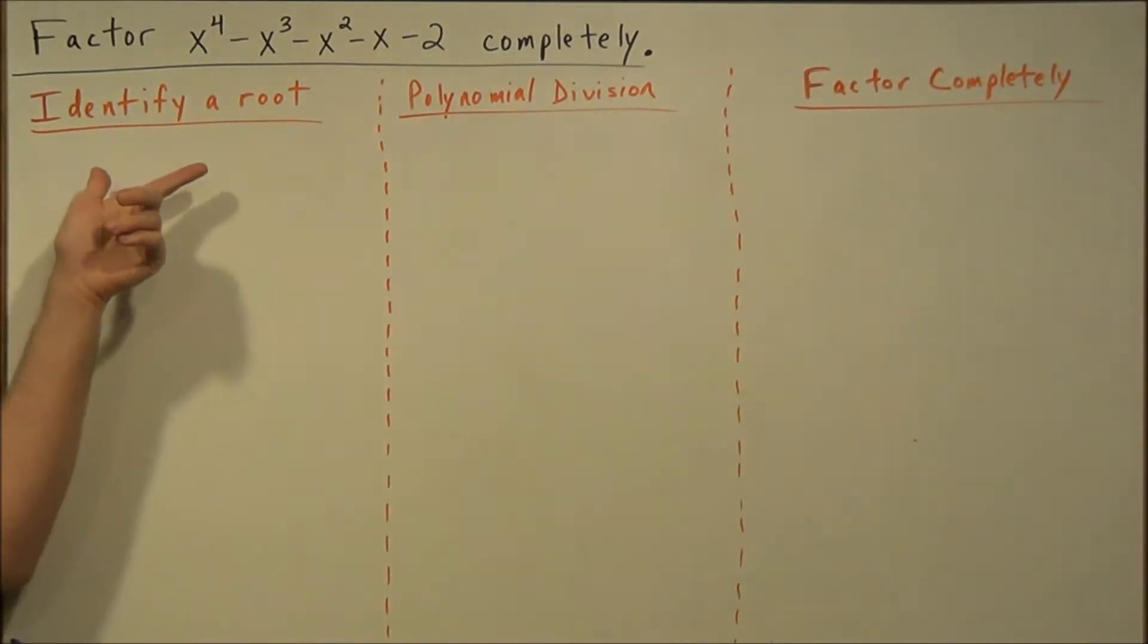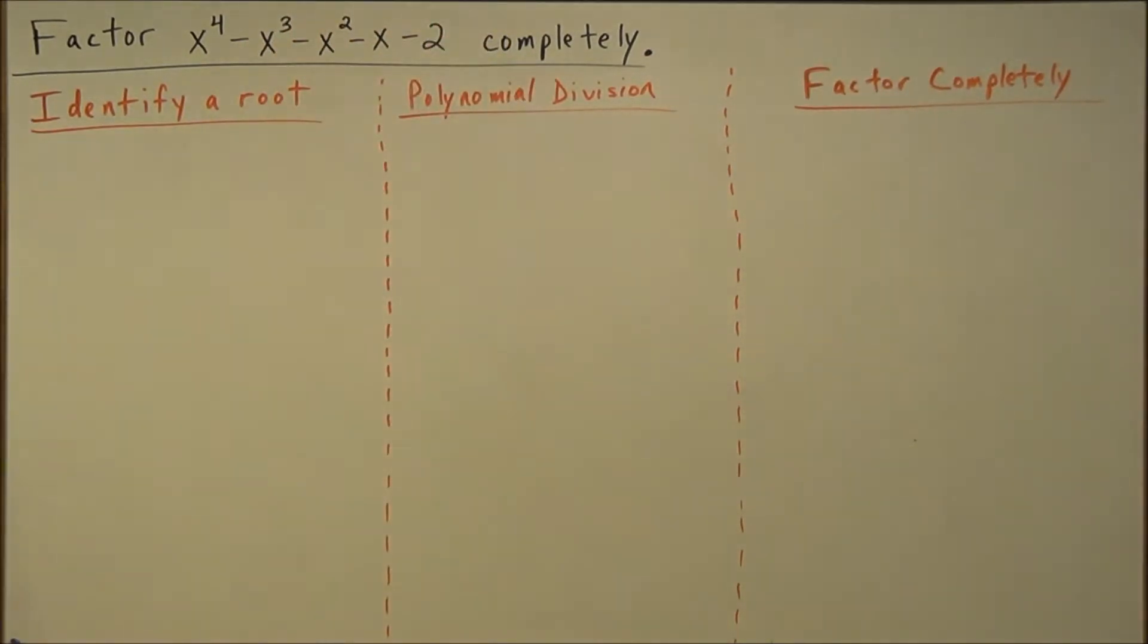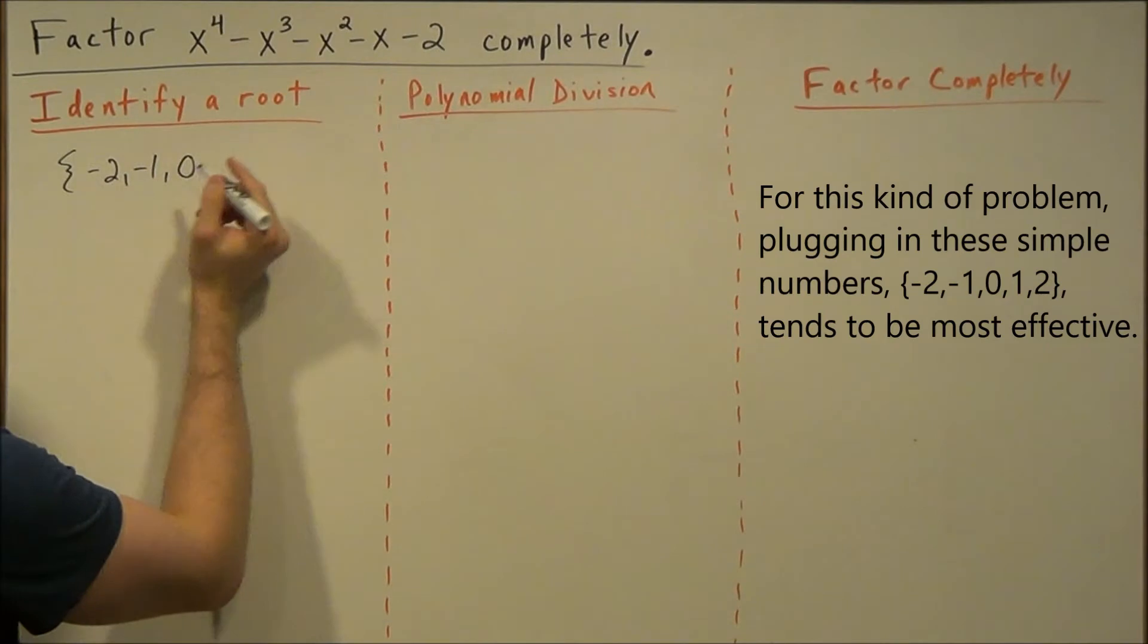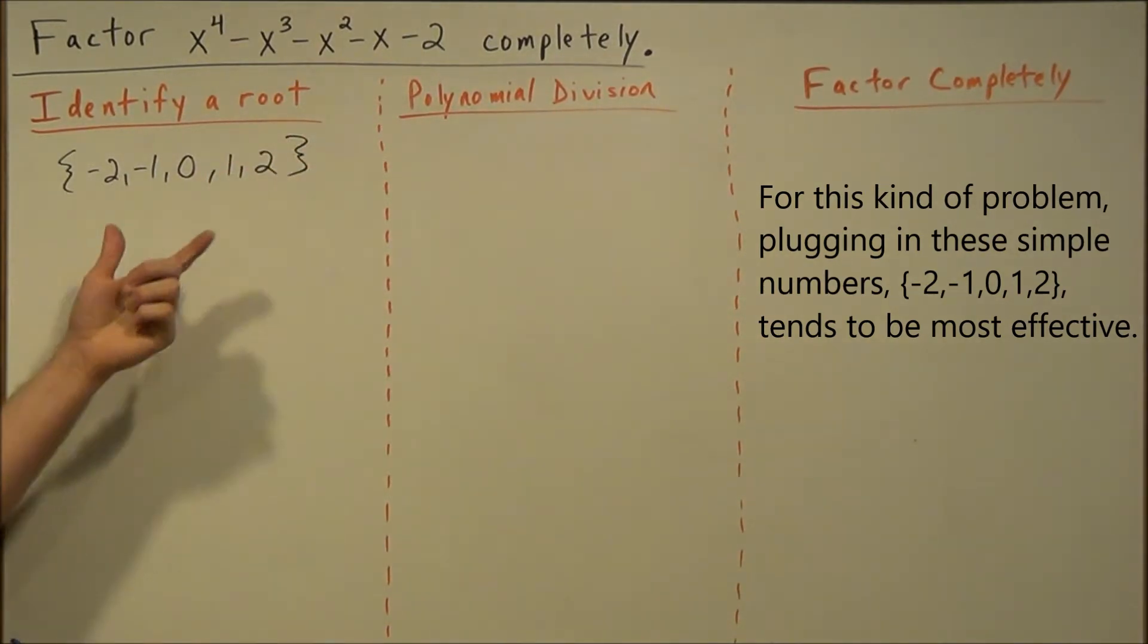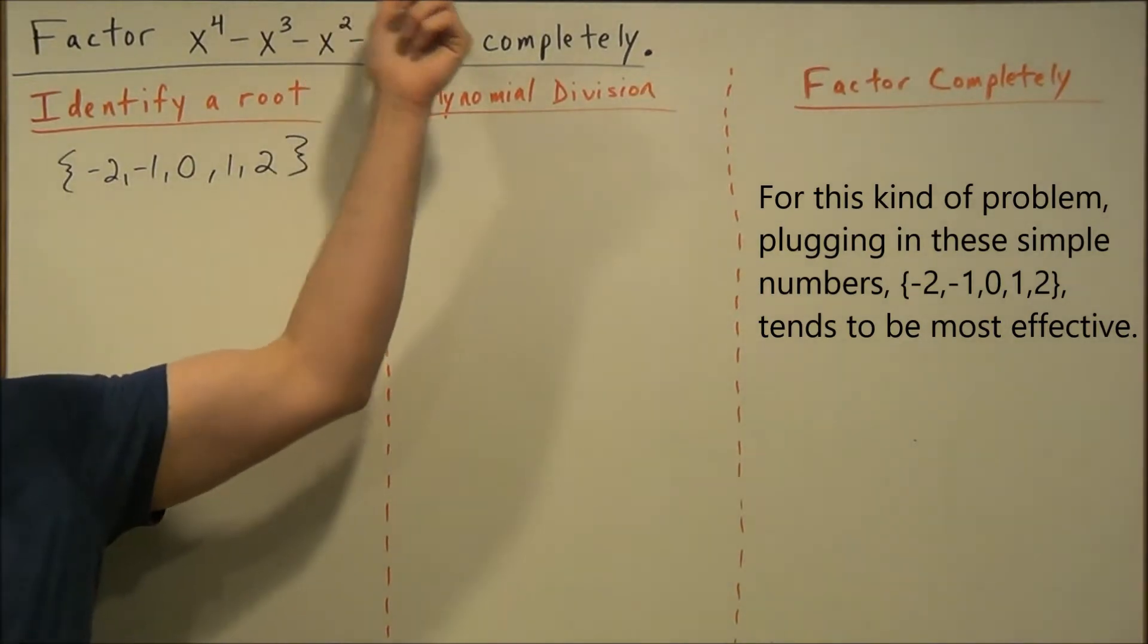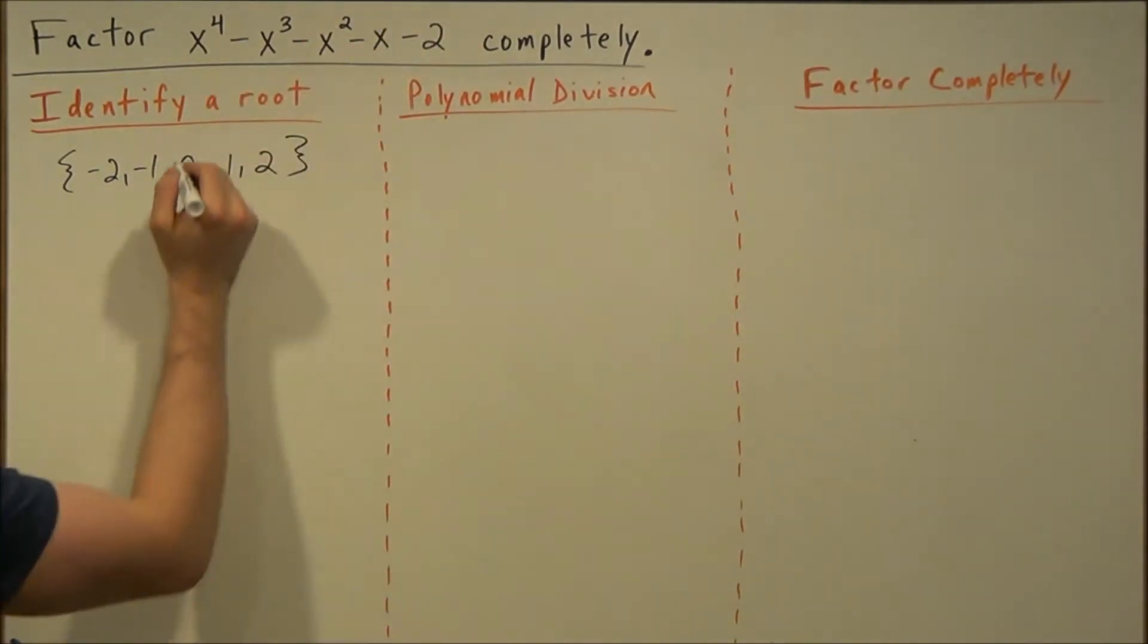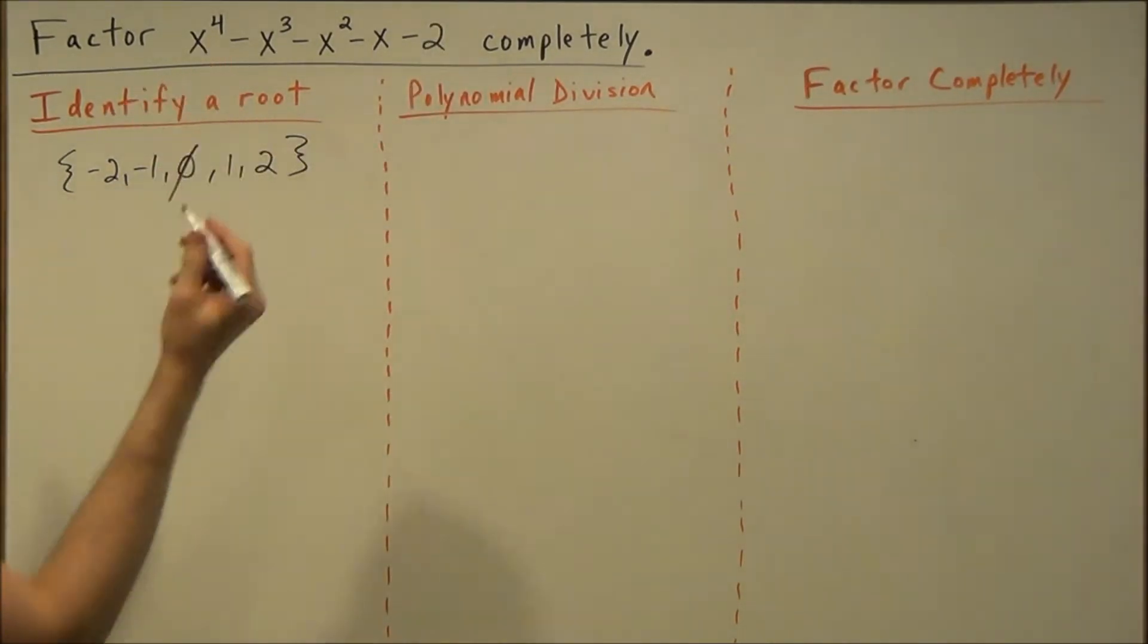Now I know we're looking for a root and this is an expression. Pretend this is a function for a moment. If we test out a few basic values like negative 1, negative 2, 0, 1 or 2, this should allow us to identify what would be a root of this if it were a function. If we try out 0, 0 is not a root because the intercept would be negative 2. If we try out 1, we would wind up with something like this that does not equal 0, so 1 is out.